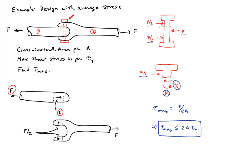So τ_max then becomes F over 2A, and I can rearrange this and say that F_max has to be less than or equal to twice the area times the yield stress in shear. That's a simple example of using this notion of average stress in a system to come to a design decision. In this case, what is the maximum force that the linkage can support?